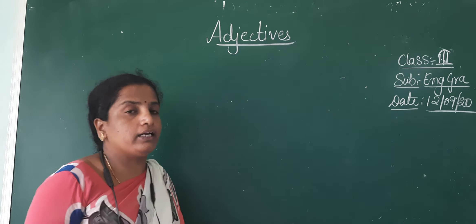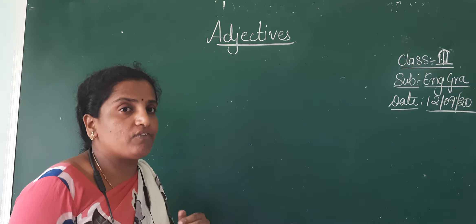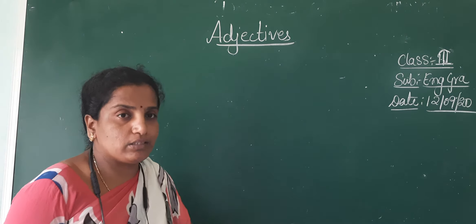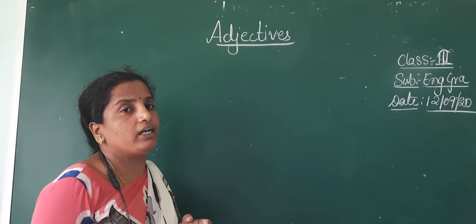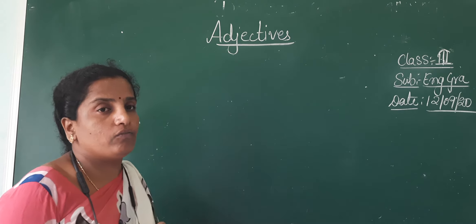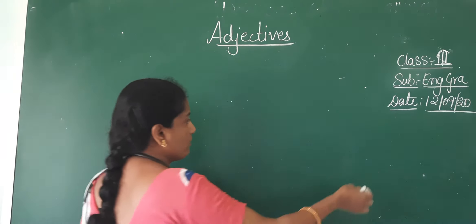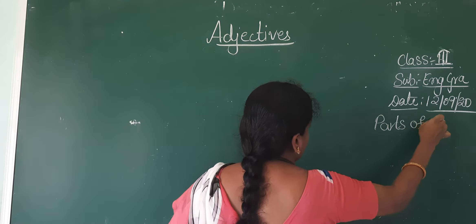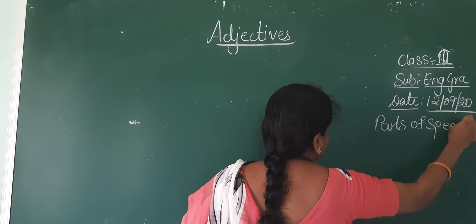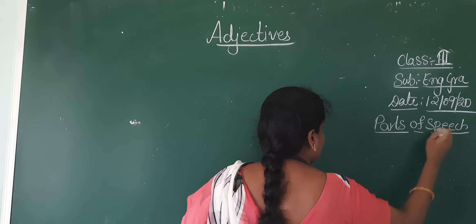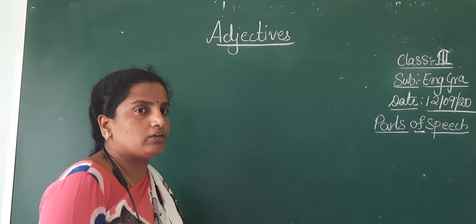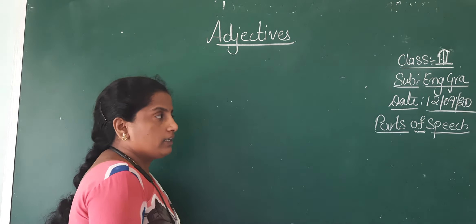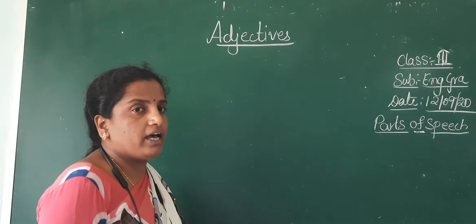In the English language, whatever words we are using to express our feelings and thoughts have been divided into a few parts — eight parts. These eight parts are known as parts of speech, meaning the classification of words according to their functioning in a sentence. Total we have eight parts.